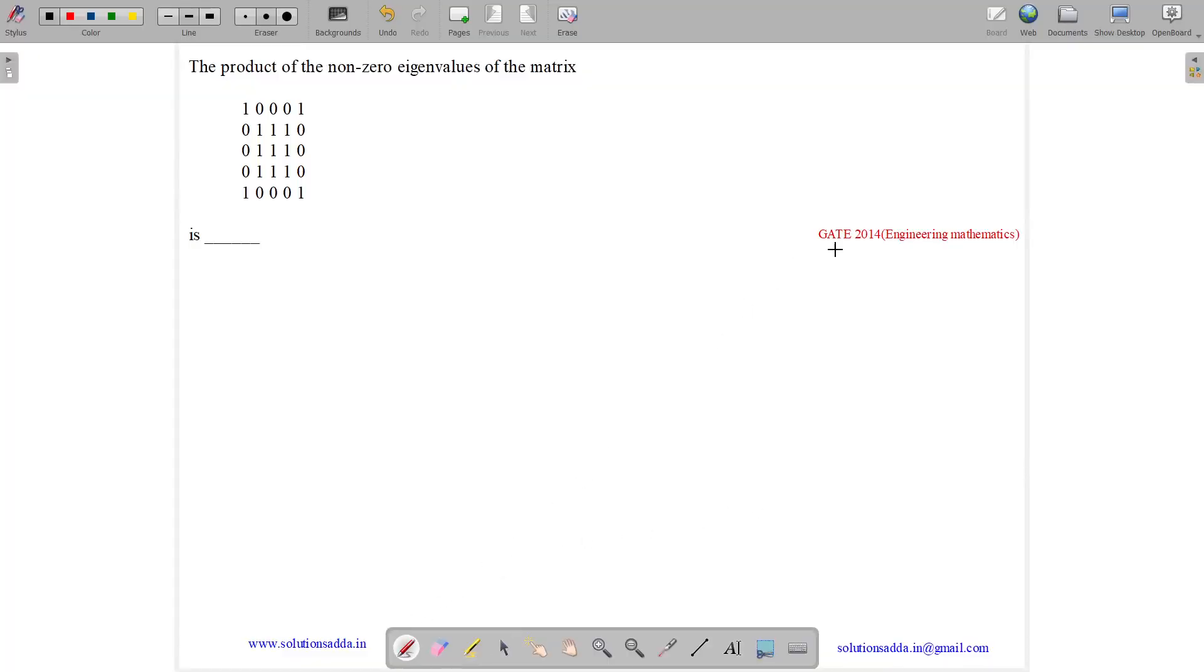This question belongs to Engineering Mathematics subject and was asked in GATE 2014 set 2. The question states, the product of the non-zero eigenvalues of the matrix. So this is our matrix M. We need to find the product of the non-zero eigenvalues.